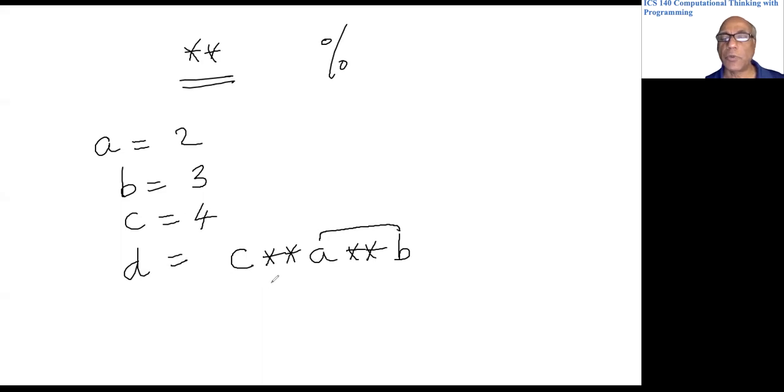Well, it will first do this exponentiation. Exponentiation will be done from right to left, so it will do a star star b which is going to give you two star star three which is going to be eight. And then this is of course four, so it will do four star star eight, so four will be multiplied by itself eight times.